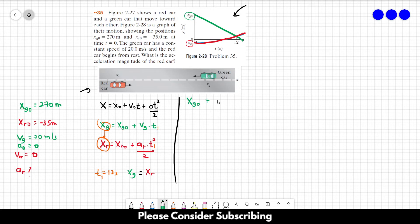XG0 plus VG times T1 is equal to XR0 plus AT1 squared over 2. Let's see what we know in this equation. We know XG0, it's this value. We know the initial speed of the green card, it's 20. We know T1, it's 12 seconds. The initial position of the red card, we also know. The only thing that we don't know is the acceleration. So we have one equation and one thing that we don't know.